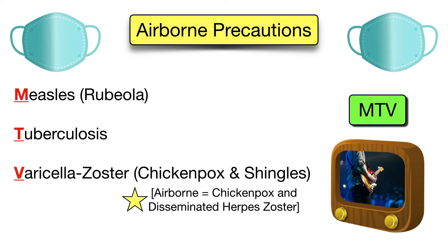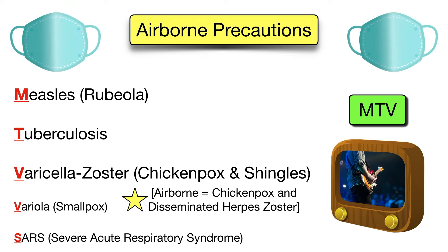We're going to see both chickenpox and shingles included in contact precautions as well. The variola virus, which causes smallpox, is also airborne. It wasn't included because of its eradication, but if there is concern or confirmation of smallpox, use airborne precautions. You can include it with the V in MTV to remember variola. It has also been generally recommended to treat SARS using airborne precautions — just make MTV plural, MTV's, to help you remember S for SARS.